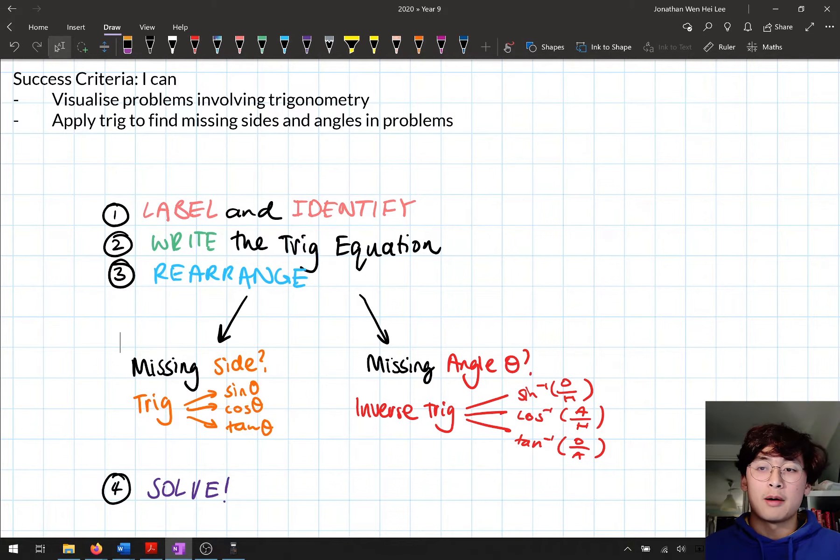In step four we solve by putting it into our calculator to get a value for what we're solving for. What we're going to be doing in this video is applying those steps to solve trig problems where we don't necessarily have a diagram in front of us or don't have all the information there. We're going to use something we've dealt with earlier this year and throughout last year: Newman's analysis.